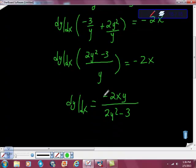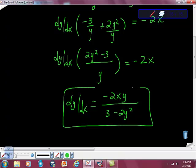I'm going to take this negative and multiply it through, which makes this -2xy over (3 - 2y²). And that's dy/dx, implicit differentiation of an ln of y function.